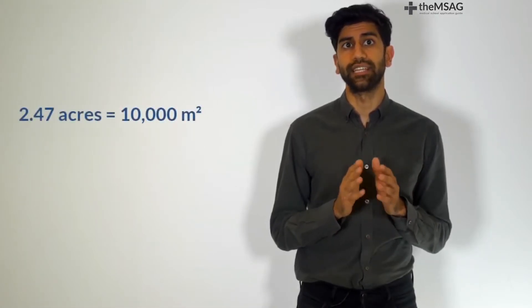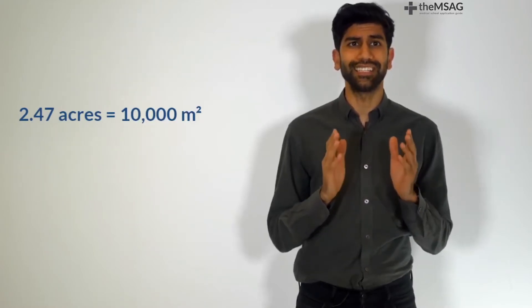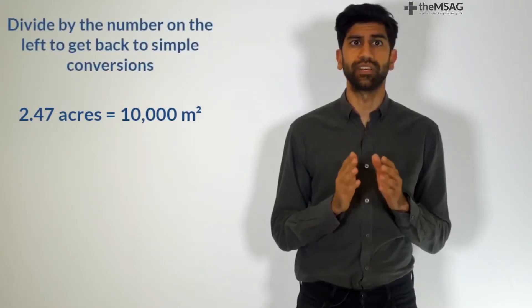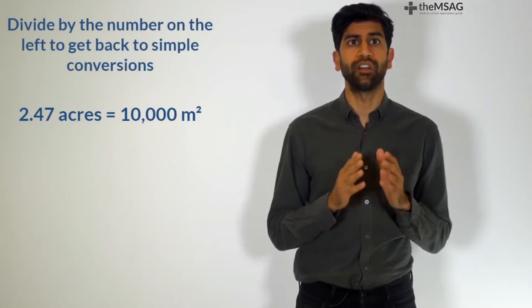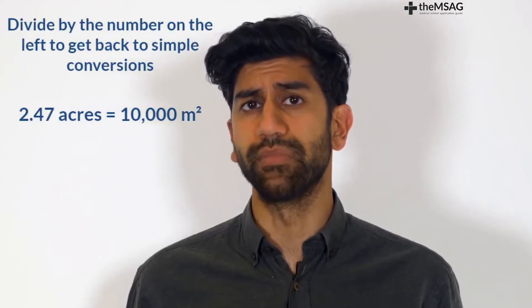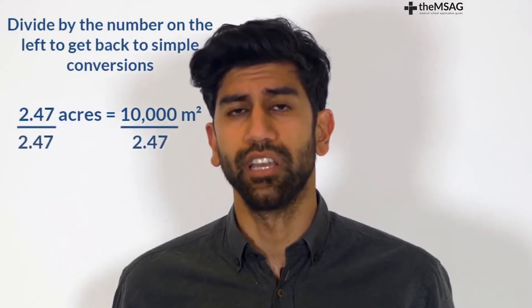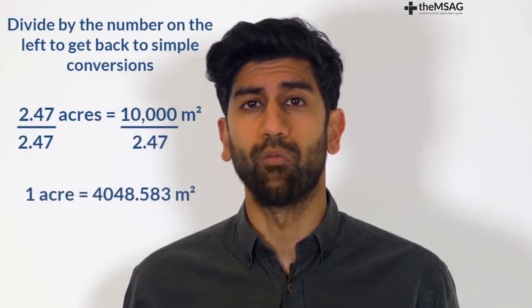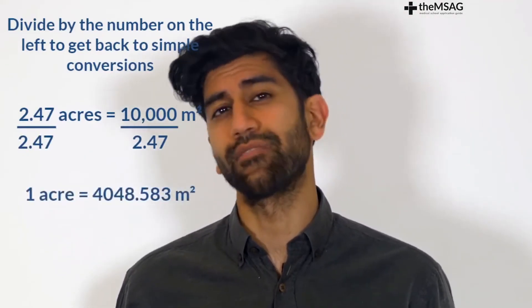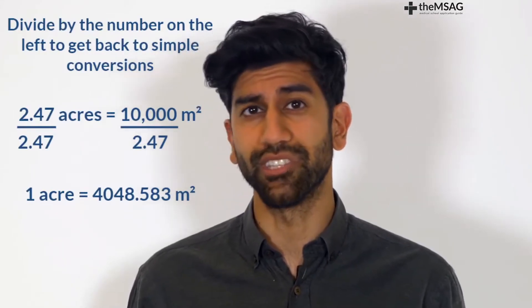The UCAT may tell you that 2.47 acres equals 10,000 meters squared. Don't despair! Instead simply divide both sides by the number on the left to get back to our very familiar unit conversions. 2.47 acres equals 10,000 meters squared. Divide both sides by 2.47 which is the number on the left. 1 acre equals 4048.583 meters squared. Then you can proceed as normal.